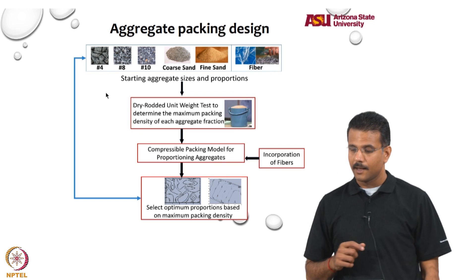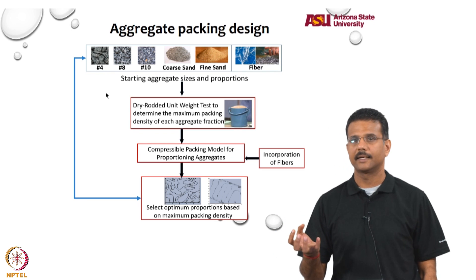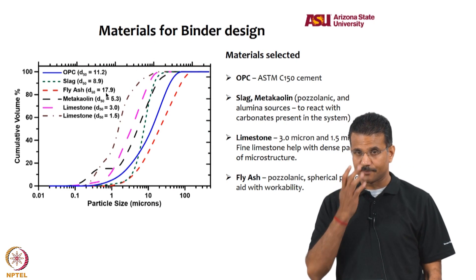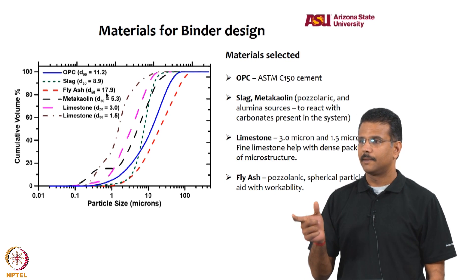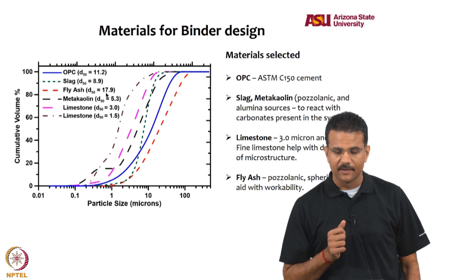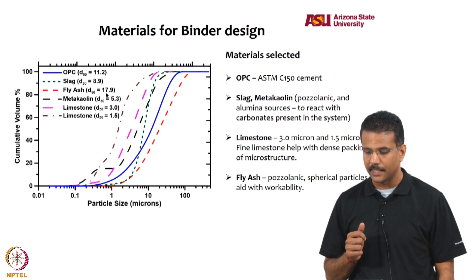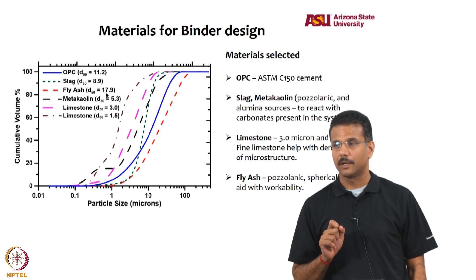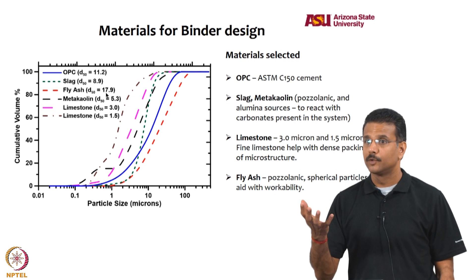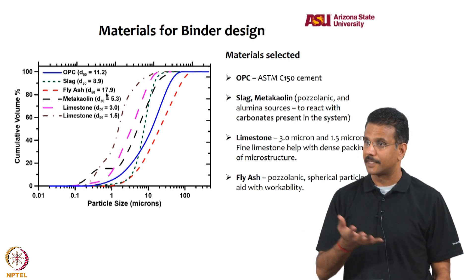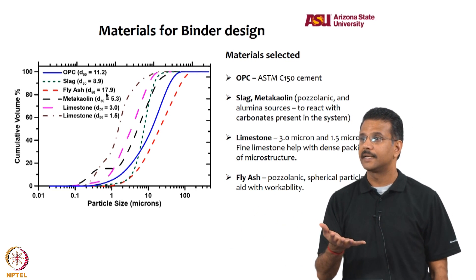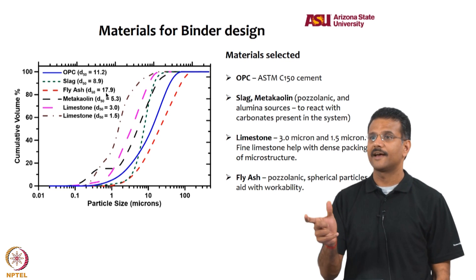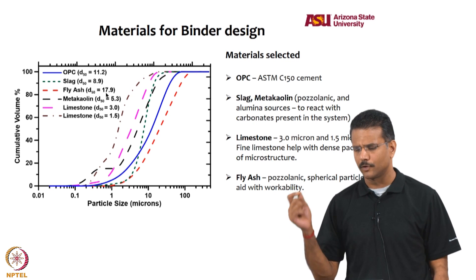A generalized method was developed for designing any paste for ultra high performance applications, relying on packing and rheology. The available materials include cement with a median size of 11.2 µm, slag at 8.9 µm, fly ash at 17.9 µm, metakaolin at 5.3 µm, submicron silica fume, and two limestone powders of 3 µm and 1.5 µm. Metakaolin and limestone are used together for the limestone-alumina synergy, as in the LC3 system, which is a better strategy than using silica fume alone.